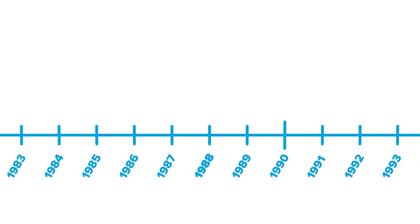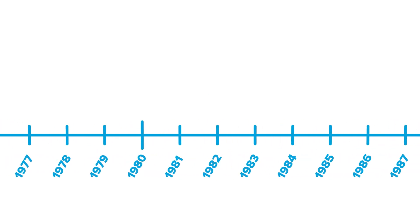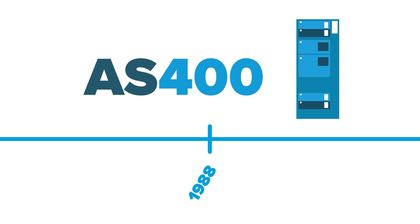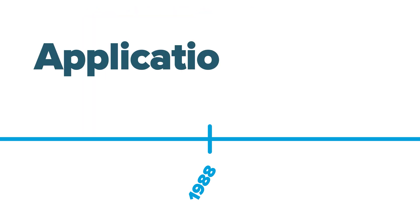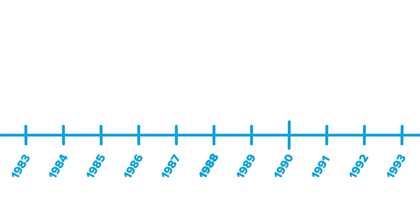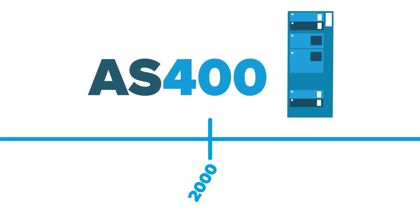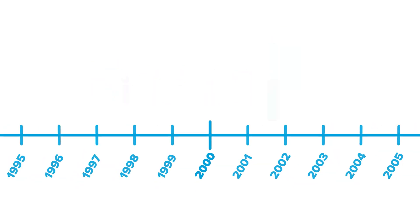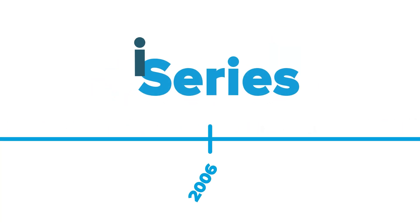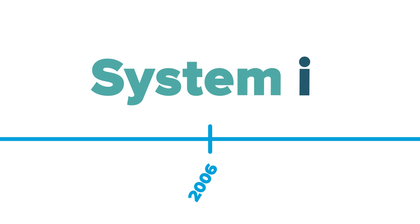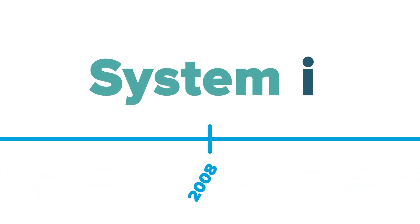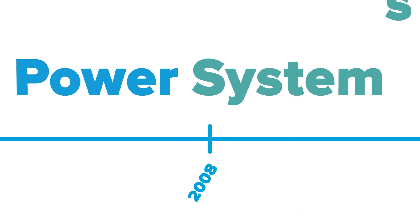Let's go all the way back to the prehistoric days of 1988, when the IBM AS400 i-Series started out as the AS400, or Application System 400. Then in 2000, it was renamed the i-Series after a few updates. Later on in 2006, the name was changed to System i as part of IBM's rebranding process. But finally in 2008, the name was changed again to Power Systems after another operating system update.